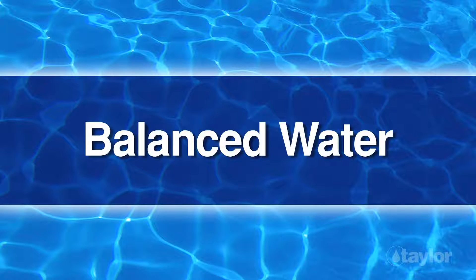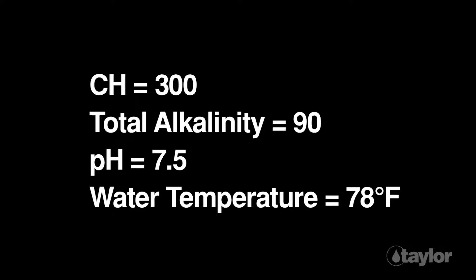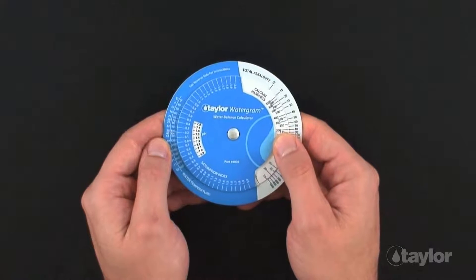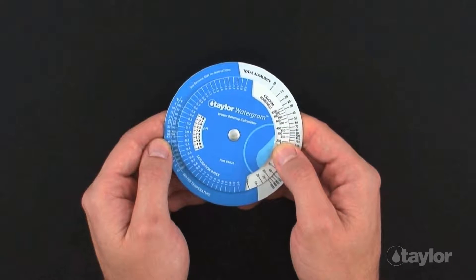Balanced water. For this demonstration, we will be using values that will give us a saturation index that indicates the water is balanced. Before using the Watergram, use your Taylor test kit to measure the calcium hardness, total alkalinity, and pH levels of the water. Set the calcium hardness value of 300 opposite the total alkalinity value of 90 on the Watergram.